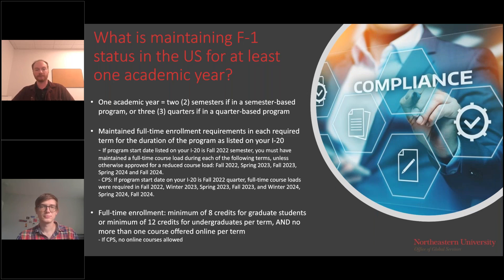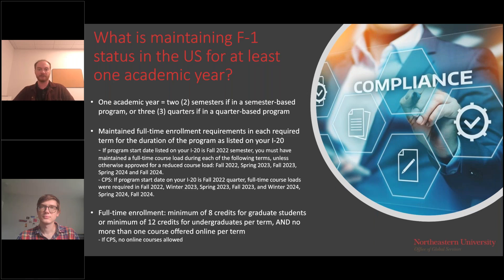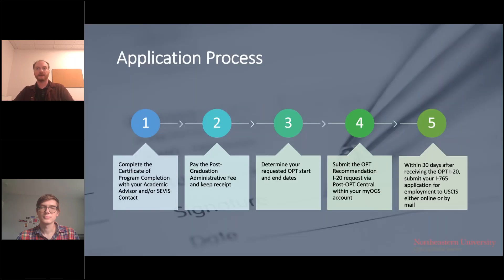Full-time enrollment means a minimum of eight credit hours per semester for graduate students, or 12 for undergraduates. A common issue is the online course requirement — you cannot have been over-enrolled in online courses while neglecting your on-ground presence. For an eight-credit-hour student, you must have completed at least one on-ground course. Multiple online courses beyond that could jeopardize your eligibility if you potentially violated your status. When reviewing your application, we will look into your course registration history.